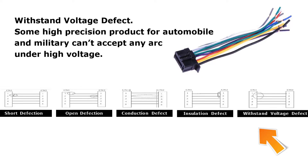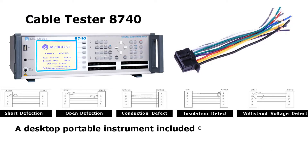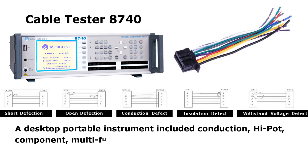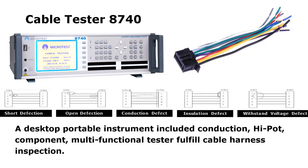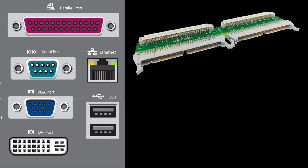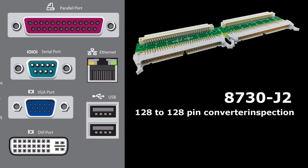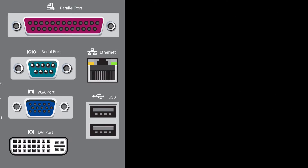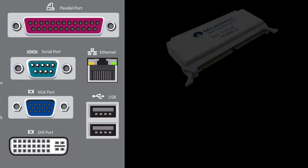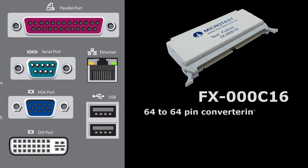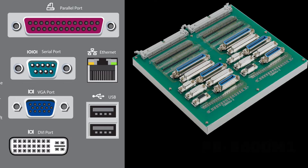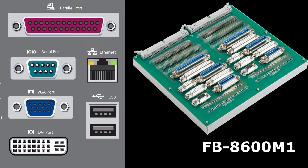A desktop portable instrument including conduction, hipot, component, and multi-functional testing can fulfill cable harness inspection. The Microtest 8740 provides a converter fixture option, as well as a universal fixture board or customized fixtures.